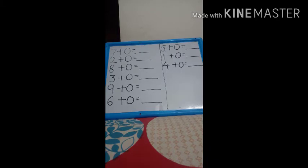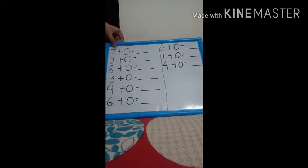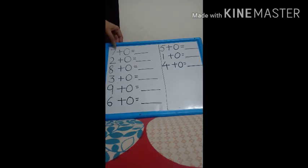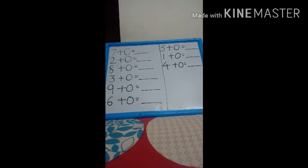So, I have the answer that when we add any number - 1, 2, 3, 4, 5, 6, 7, 8, 9, any number, 10, any number if I add to the zero, then what is the answer? The same number will be the answer. In this case, you need not to draw any lines and add. You can think from your mind and then you can do.